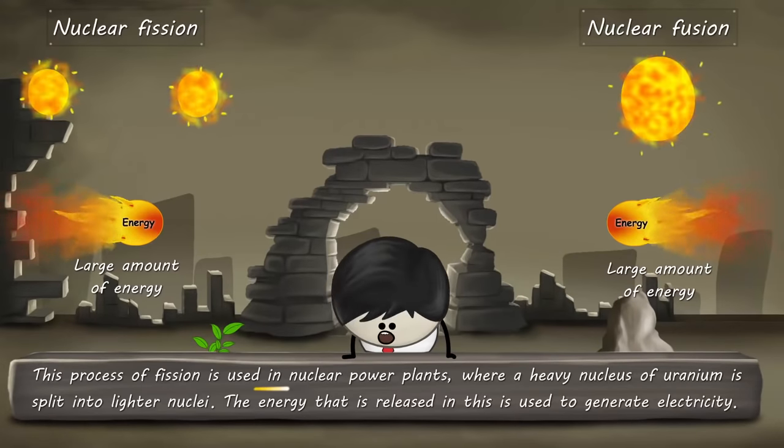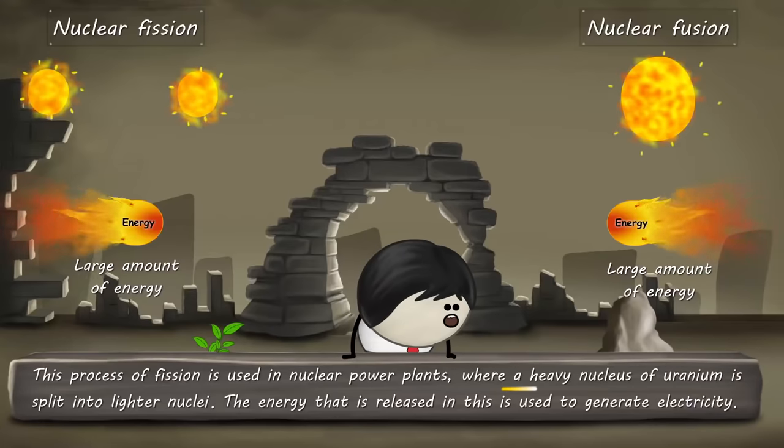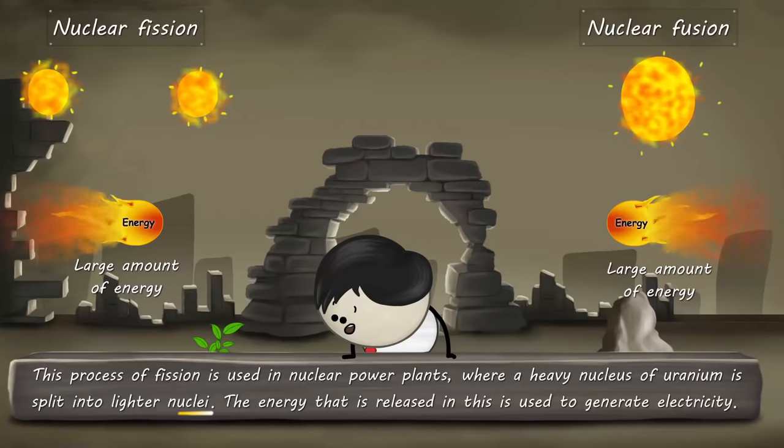This process of fission is used in nuclear power plants, where a heavy nucleus of uranium is split into lighter nuclei.